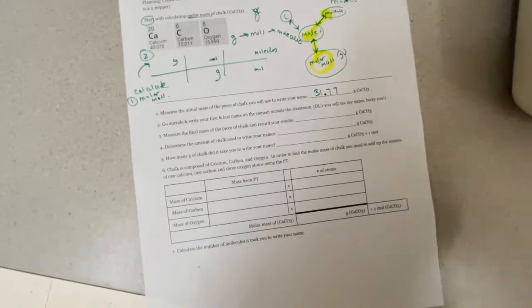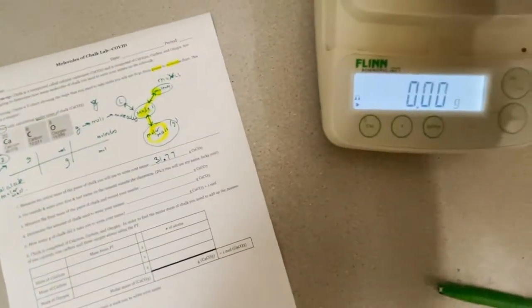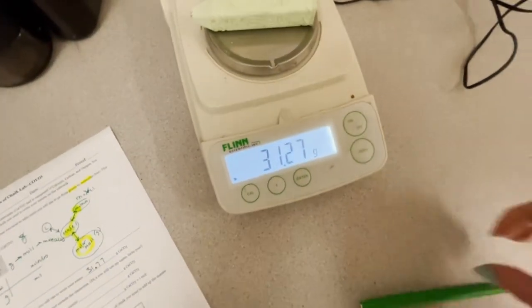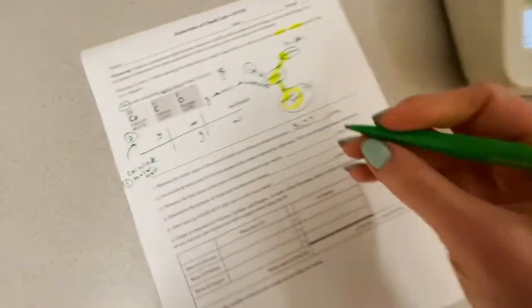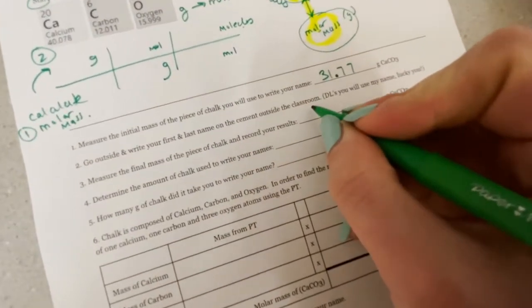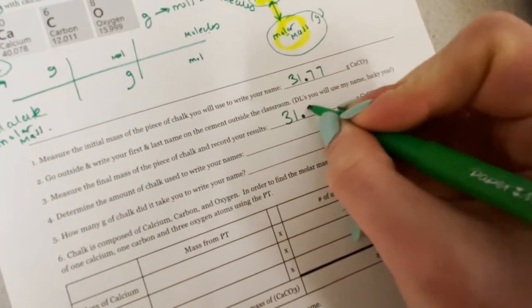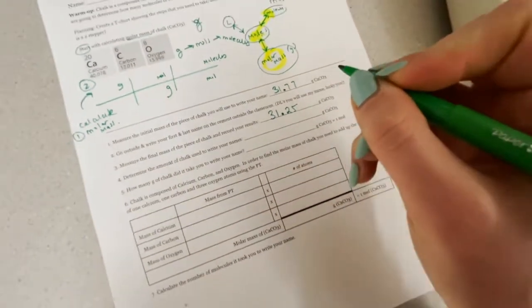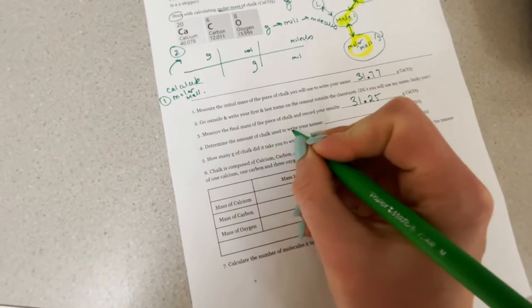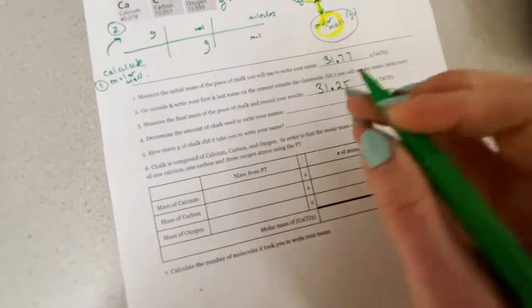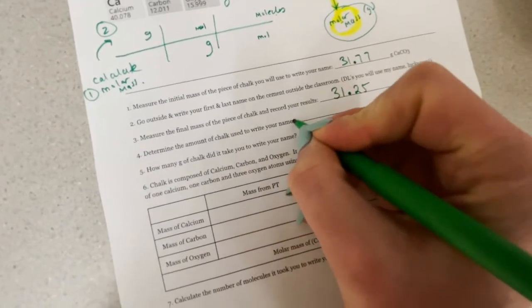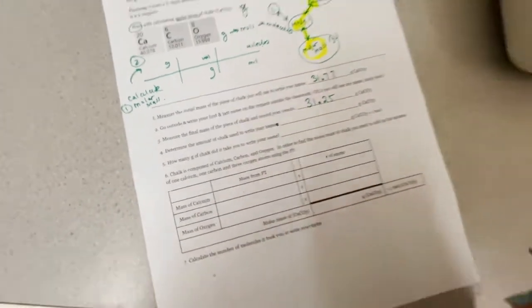Now, number three, measure the final mass of the piece of chalk and record your results. So here we are, 31.27. Okay, so determine the amount of chalk used to write your name. There's just one name. Valerie Moore.